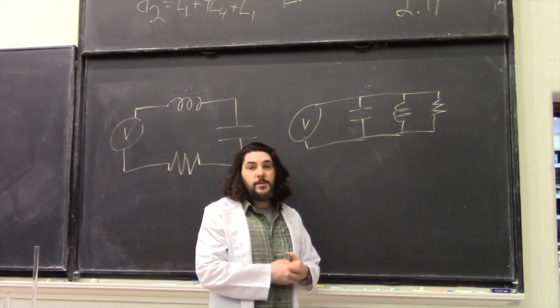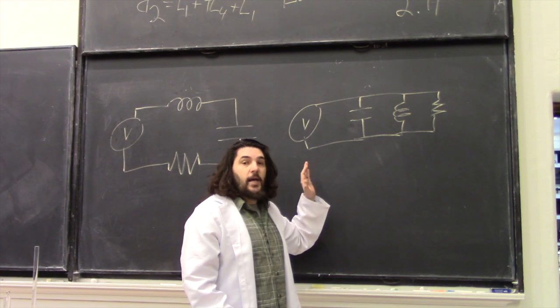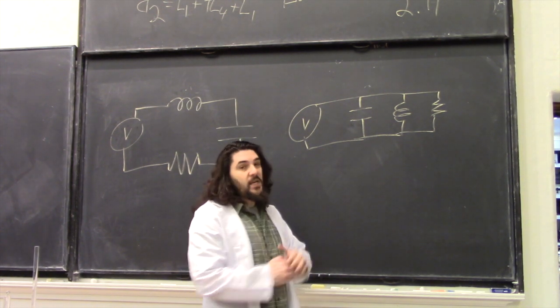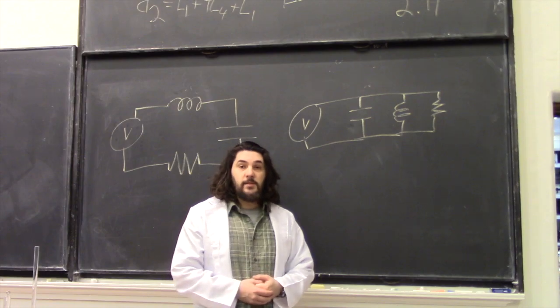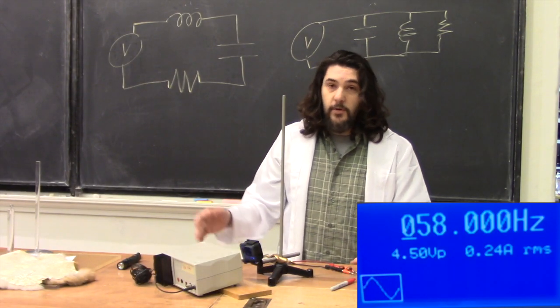So we have the exact opposite behavior of our series circuit, where we have infinite current at low and high frequency. And we reach a minimum current when we get to resonance frequencies. Now, at low frequencies, we're drawing a fairly high current, 240 milliamps.